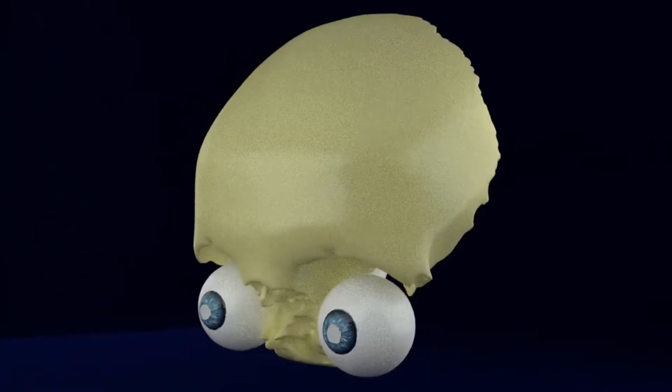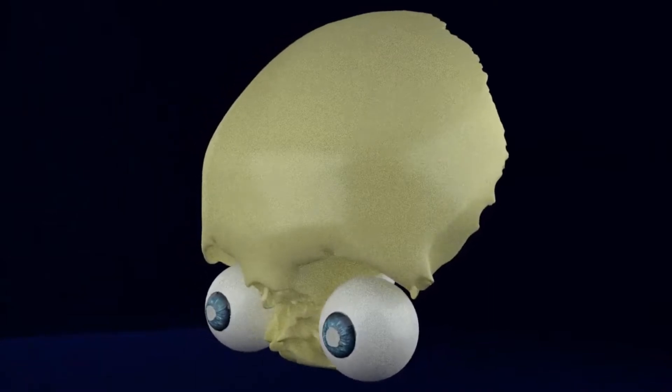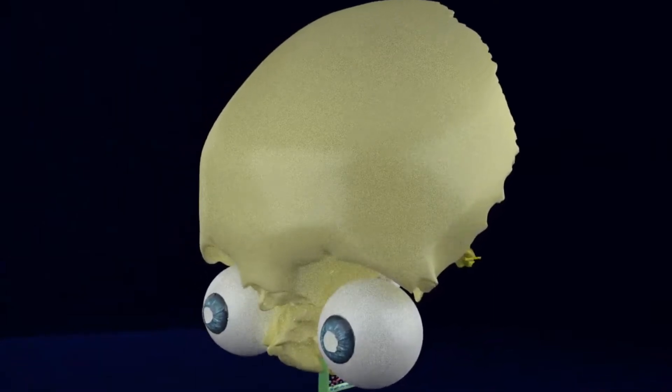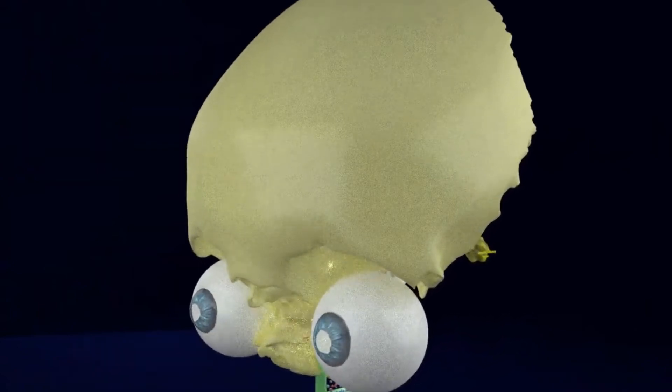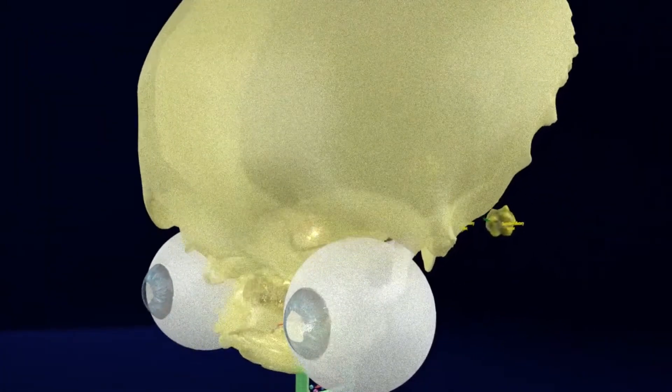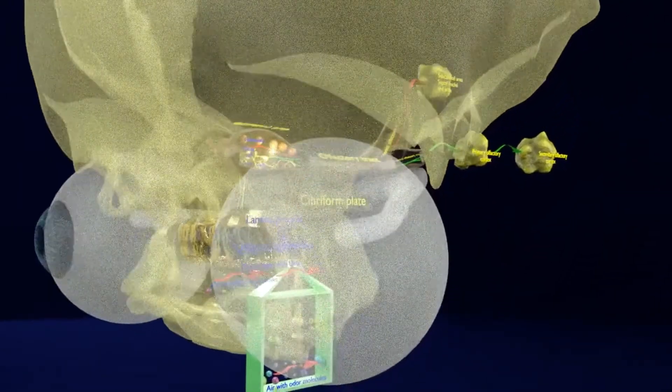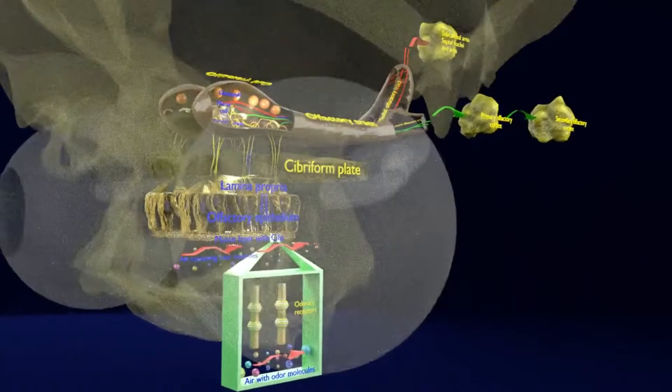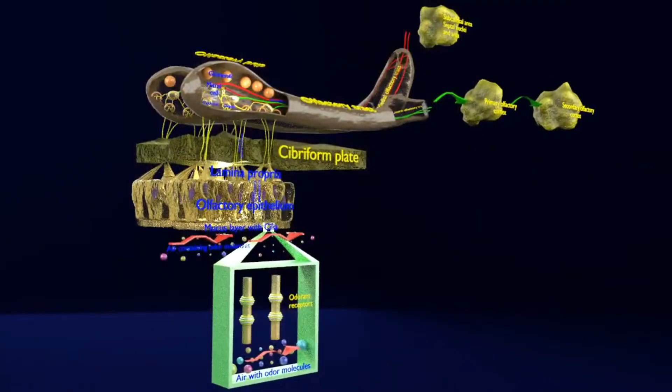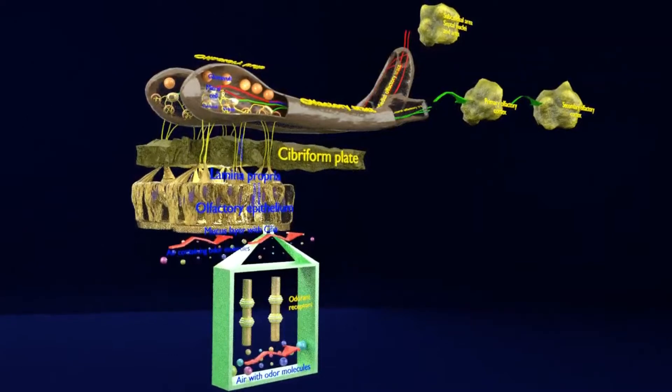To summarize the pathway of the sense of smell, basically the odorant molecules are detected by the olfactory sensory neurons and sent to the olfactory bulb via the olfactory nerve and then later on to the primary and secondary olfactory cortex of the brain through the olfactory tract.